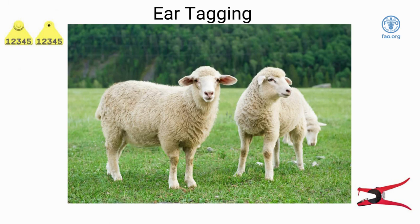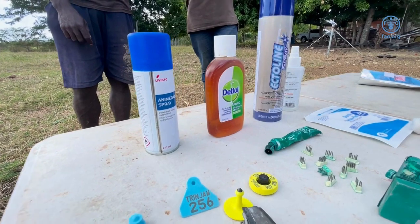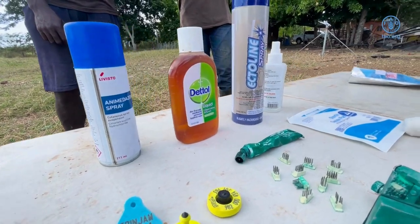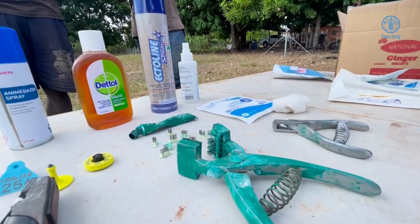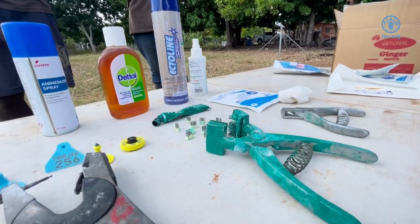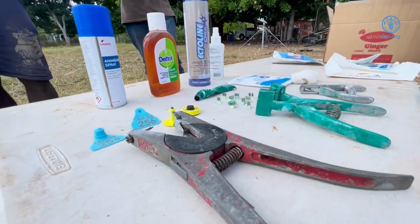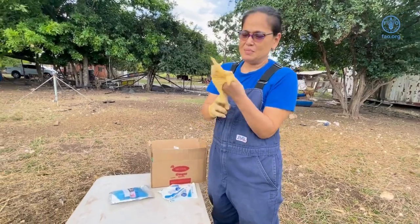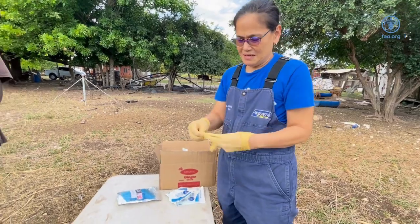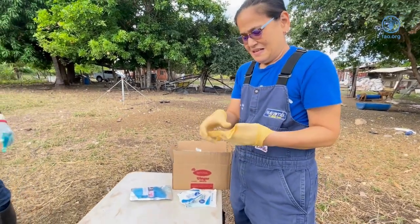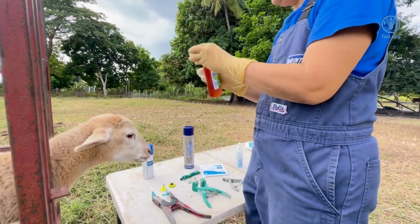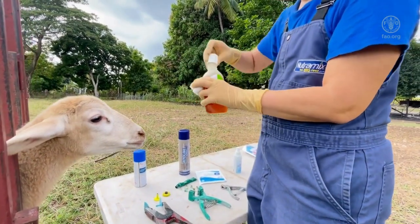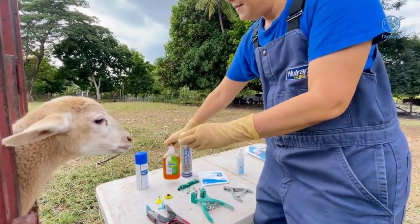There are several systems that can be used to identify goats and sheep. The most common methods include ear tagging, tattooing, and ear notching. Each of these systems ensures that a unique number or symbol is given to the animal so that they can be identified. In this video, ear tagging will be demonstrated.